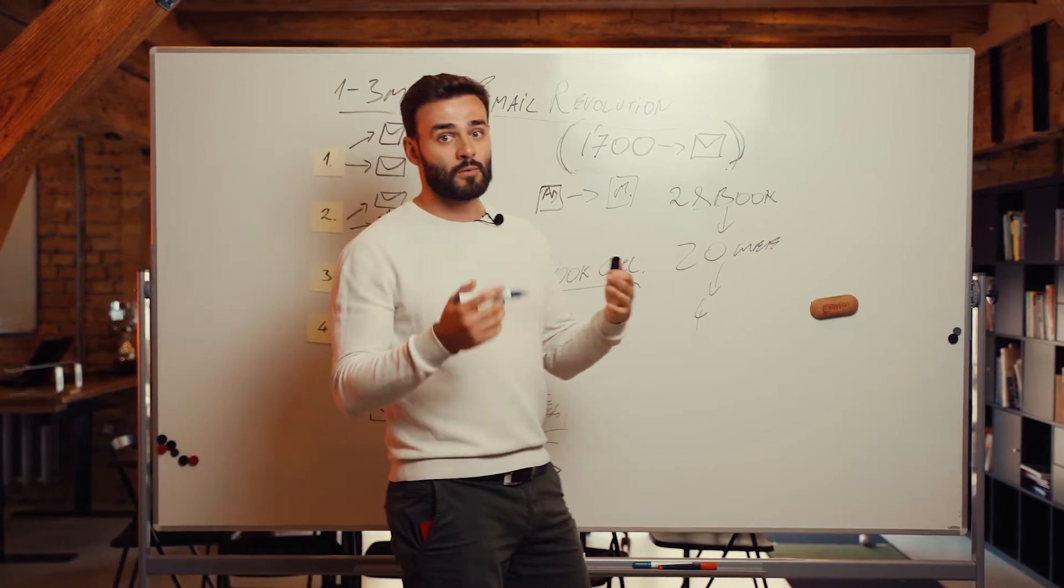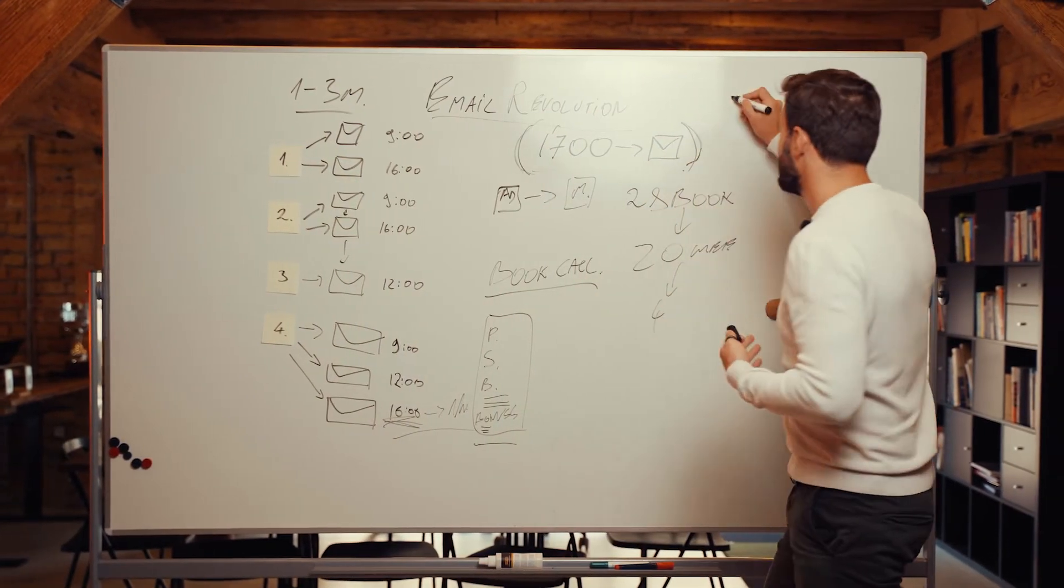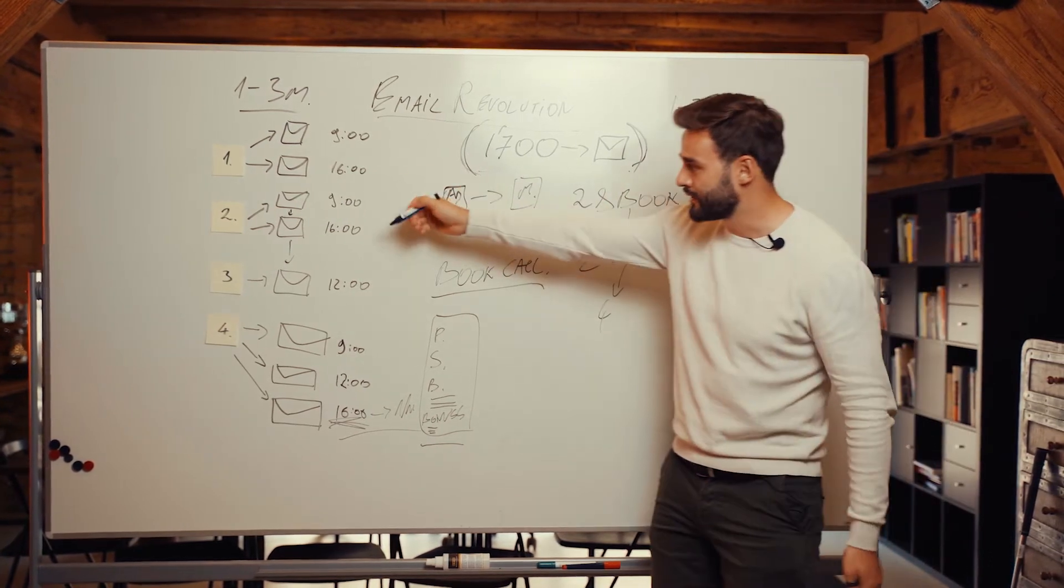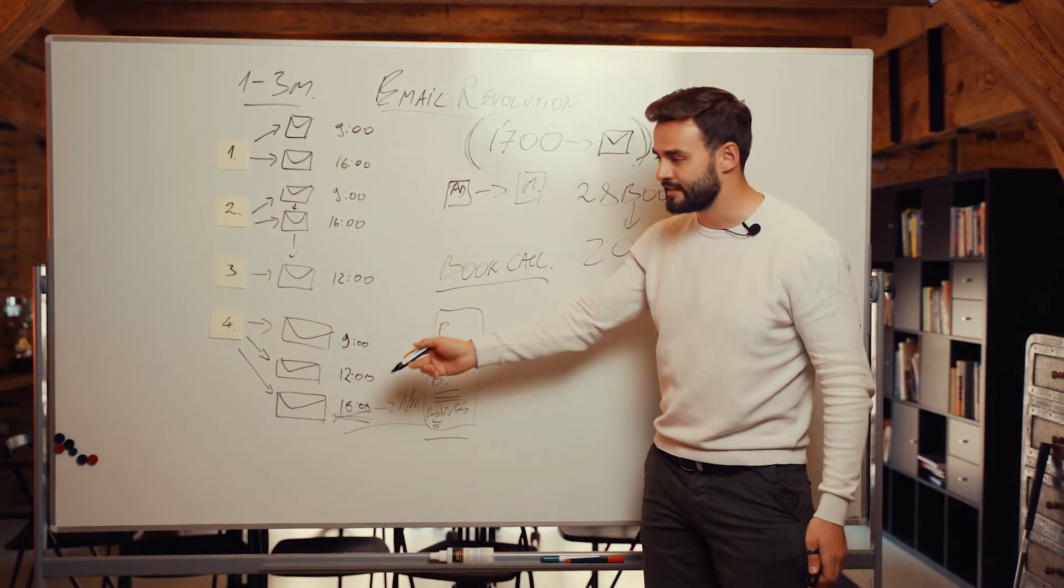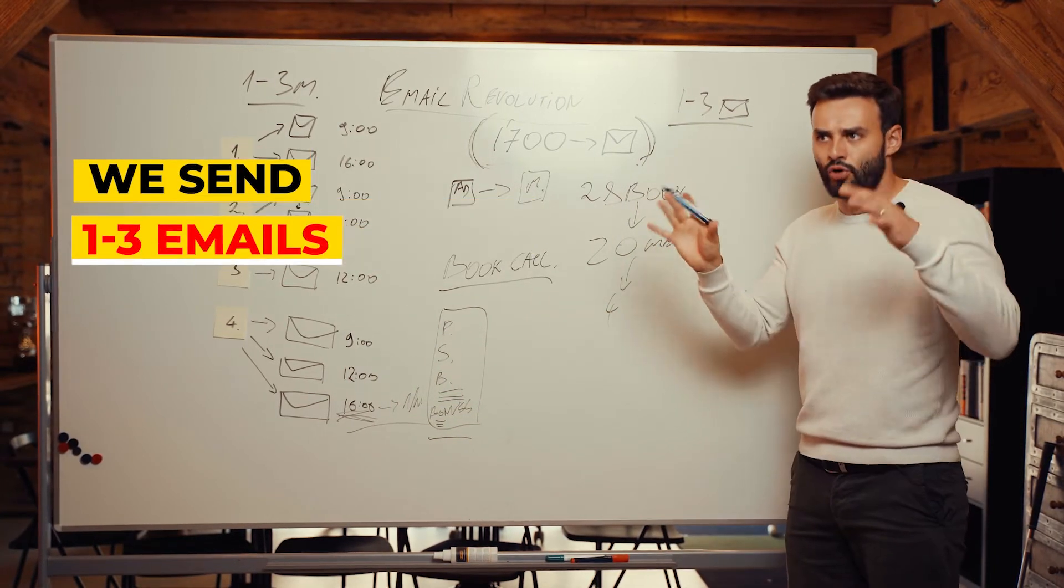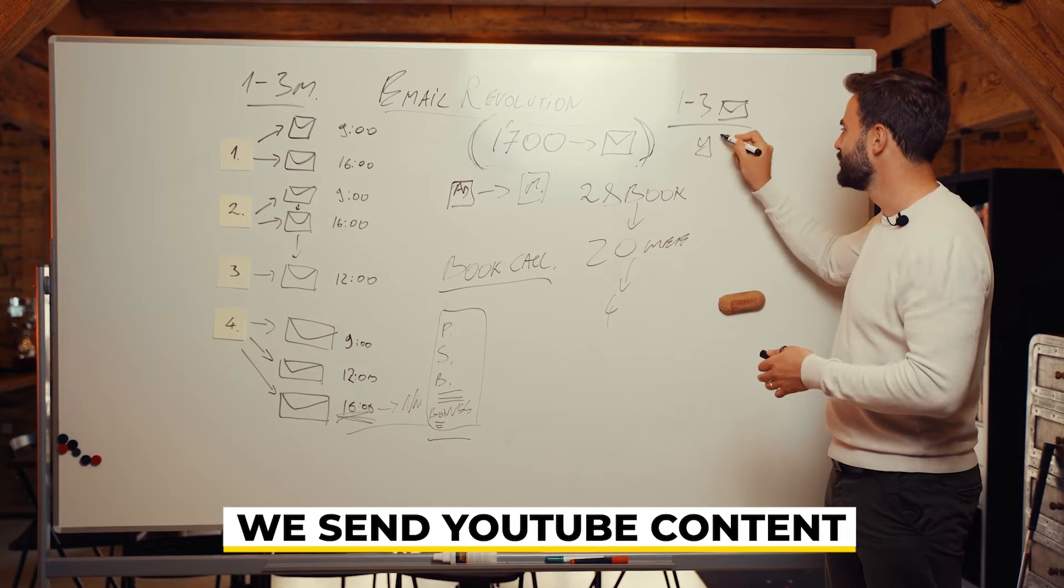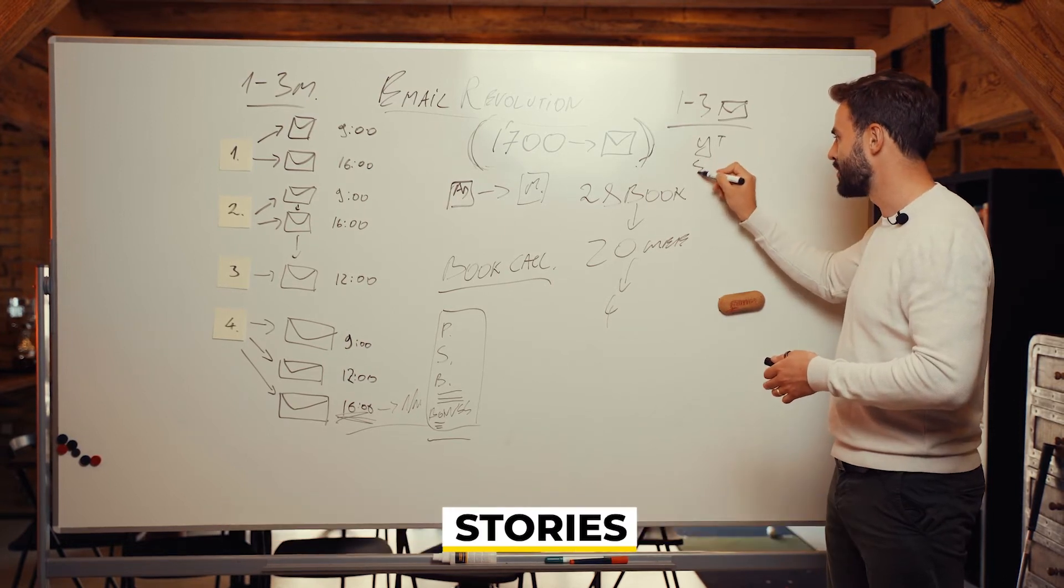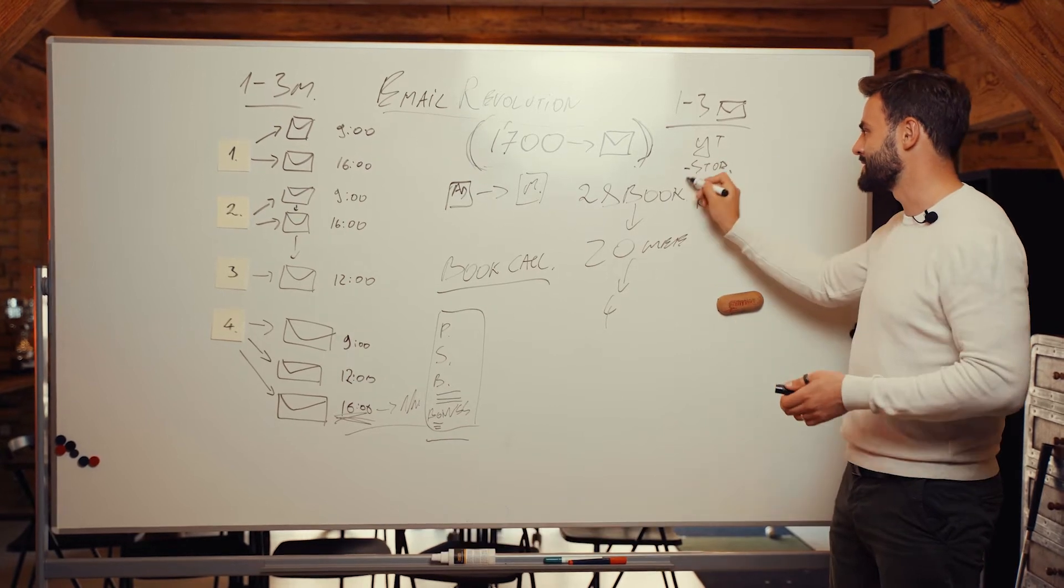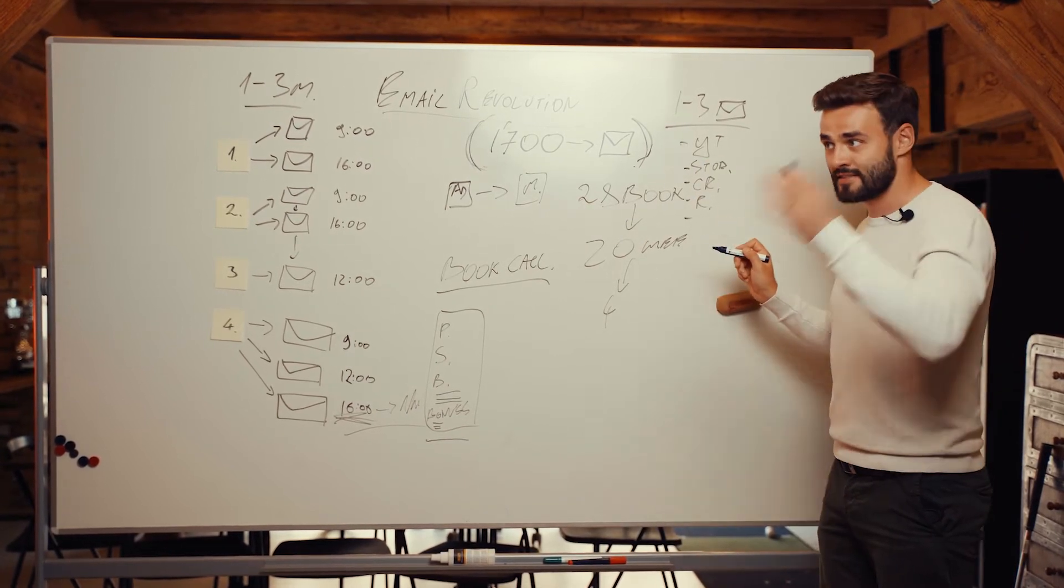Usually what we do and what we send to our list is we send from one to three emails per month. This was a lot, right? You can see it's five, six, seven, eight, almost nine emails. So we send one to three per month regularly, like normally. What we send: we send YouTube content, we send some story, we send client review or some results from something. Sometimes we send like an offer like book a call.